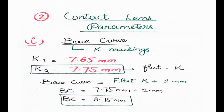For the calculation of contact lens parameters, we have three important parameters: base curve, total diameter, and contact lens power. Along with these three, we have another parameter which is the optic zone - the central area that provides the power. I have discussed how to calculate the optic zone area in the introduction to contact lens video, the link will be in the description.